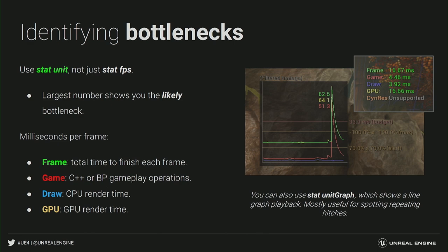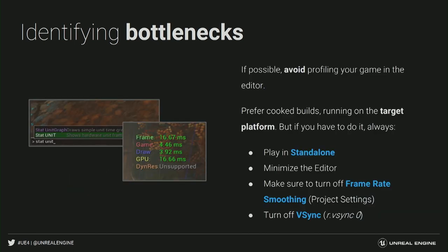Each of these threads runs in parallel, and each one needs the result of the thread before it. When you're looking for bottlenecks, the closer you're running your game to the target hardware in the target environment, the more precise the numbers you get. So if possible, avoid profiling in the editor. If you're working on console platforms or mobile devices, really avoid it because you're not debugging on the actual platform. Unreal works very similarly for PC and consoles in terms of rendering, but for mobile it uses the forward rendering path, so it's completely different. Make sure you're using a cooked build and running on target hardware. If you're making a PC game and really must profile in the editor, play in standalone mode and minimize the editor. Also turn off frame rate smoothing and vSync using `r.VSync 0`.